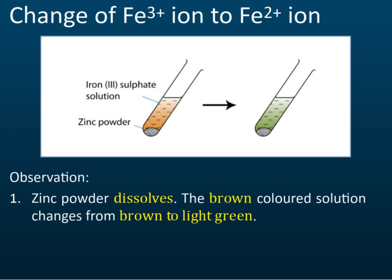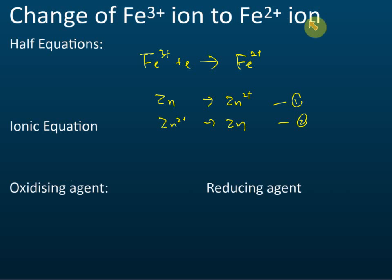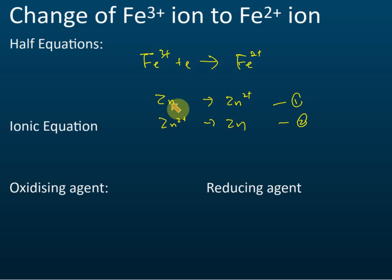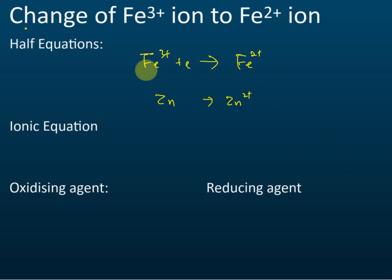For this reaction — zinc powder with iron 3 sulfate to give iron 2 — the zinc powder dissolves in the solution and becomes colorless. Which is the correct half equation: zinc to zinc ion, or zinc ion to zinc? Equation one is correct, because before the reaction it is zinc metal, and after the reaction it becomes zinc ion.